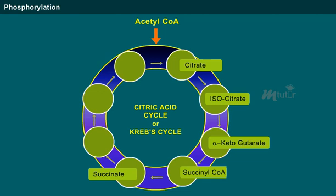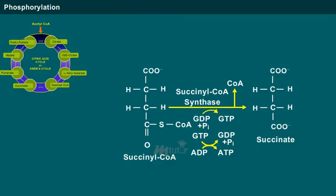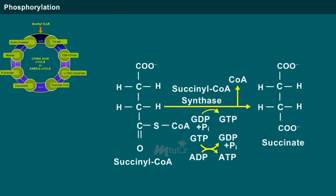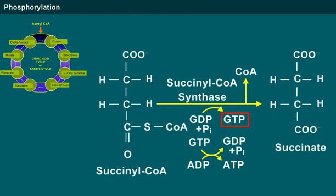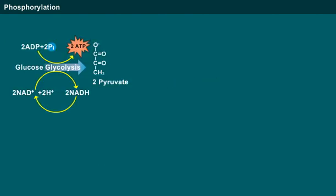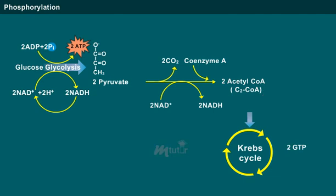The substrate level phosphorylation in Krebs cycle involves succinyl-CoA and transfer of phosphate group from guanosine diphosphate, which results in the formation of succinate and guanosine triphosphate. However, each glucose molecule produces 2 pyruvate molecules, which in turn produce 2 acetyl-CoA molecules. The 2 turns of Krebs cycle result in the formation of 2 GTP molecules, along with 6 NADH molecules and 2 FADH2 molecules. The 2 GTP molecules are equivalent to 2 ATP molecules.